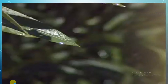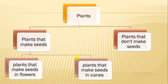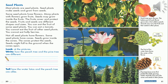Okay guys, let's now move to this slide. Plants have two kinds: plants that make seeds and plants that don't make seeds. Plants that make seeds may make flowers or don't make flowers — those make cones. If we look at the book pages 80 and 81, we're gonna find this: seed plants. Most plants are seed plants. Seed plants make seeds and grow from seeds.